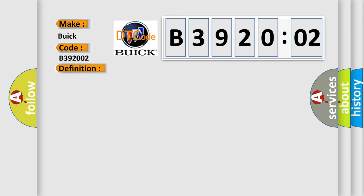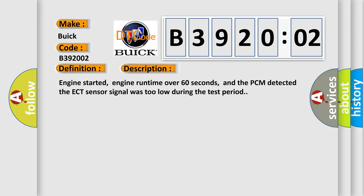And now this is a short description of this DTC code. Engine started, engine runtime over 60 seconds, and the PCM detected the ECT sensor signal was too low during the test period.